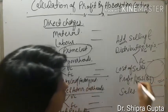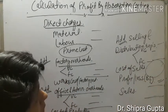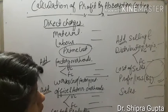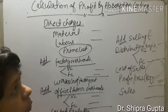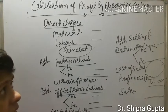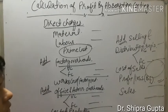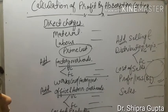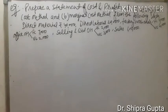By this method we calculate absorption costing. The main difference between absorption costing and marginal costing is this: in marginal costing we don't include any work in process or any opening stock or closing stock, but in absorption costing we include opening stock and closing stock at different stages.